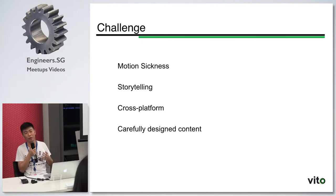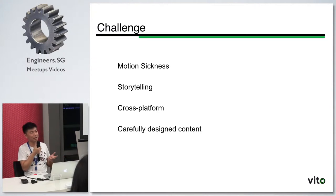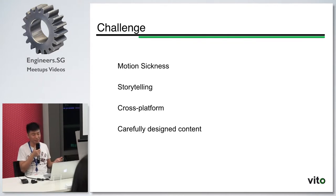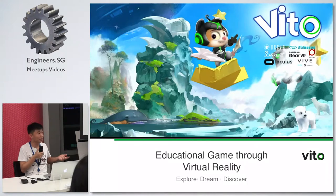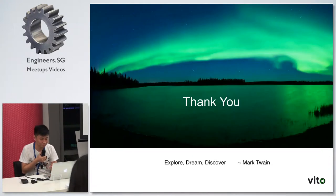Especially if we are designing content for kids, there may be some effects if improper content is exposed to the audience. For example, if the polar bear had killed the seal, I think a child would have some strong personal feelings. That's all I wanted to share. We are the Vito Education Group. Thank you.